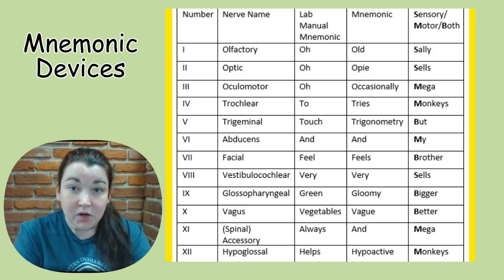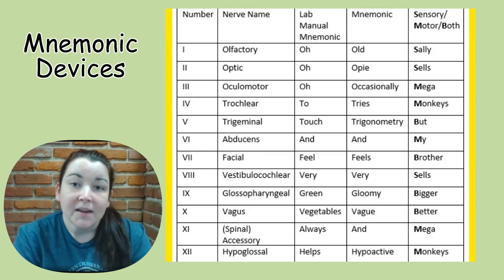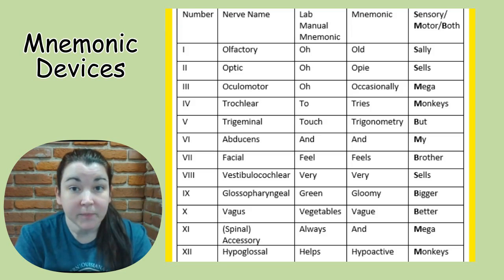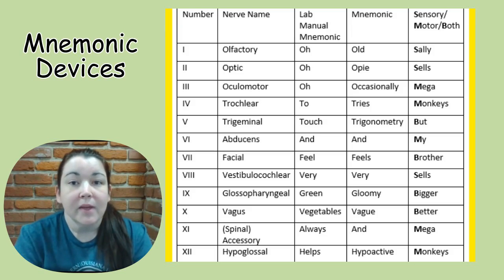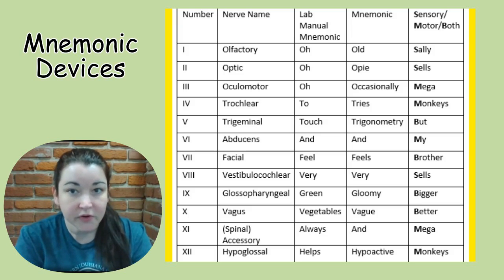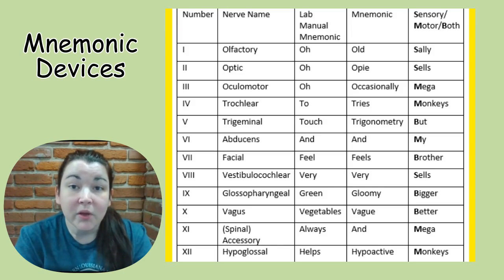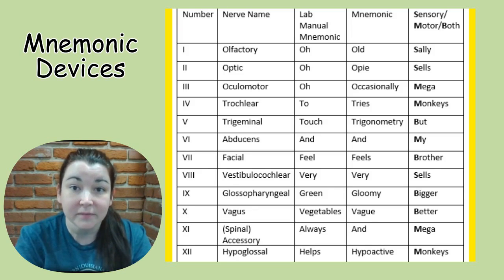Your textbook, which is Saladin, does a very good job of creating a mnemonic that gives you the first couple of letters of each cranial nerve. It's hard to remember, but if you practice it over and over it will help you out. In that textbook it says: 'Old Opie occasionally tries trigonometry and feels very gloomy, vague, and hypoactive.' This gives you the first couple of letters of each cranial nerve.